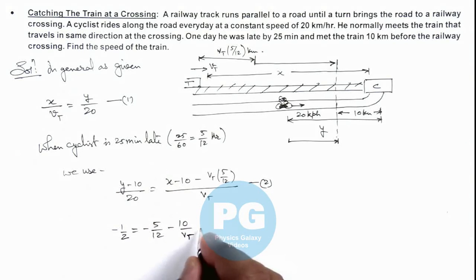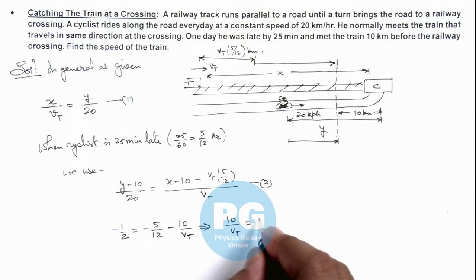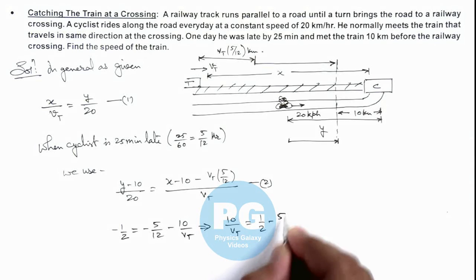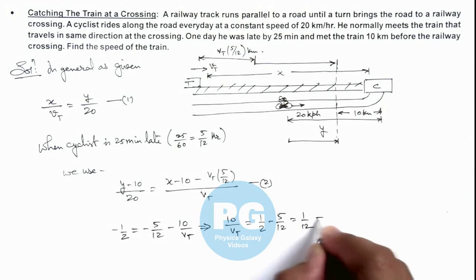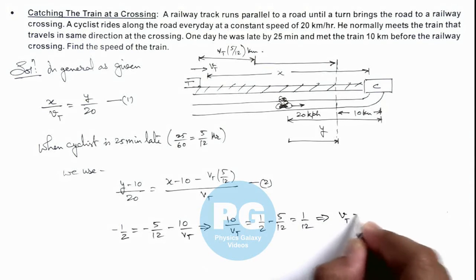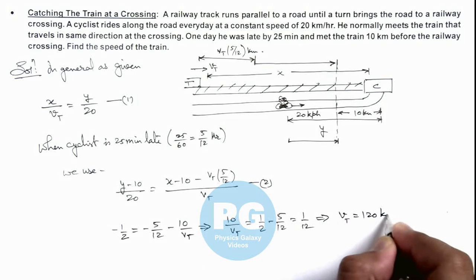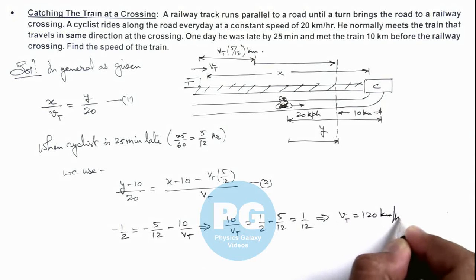Further simplifying, we see that 10 divided by v_t is equal to 1 by 2 minus 5 by 12, which is 1 by 12. This means the velocity of the train is 120 kilometers per hour. That is the result of this problem.